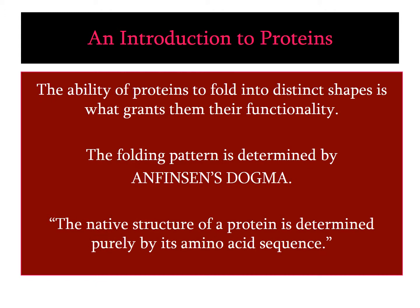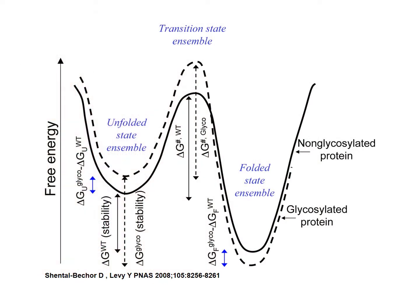Proteins exhibit secondary and tertiary structures based on their composition of amino acids. Some proteins may form polymers, some may exist as dimers, and some may exist as monomers. Their functionality is determined by their configuration.